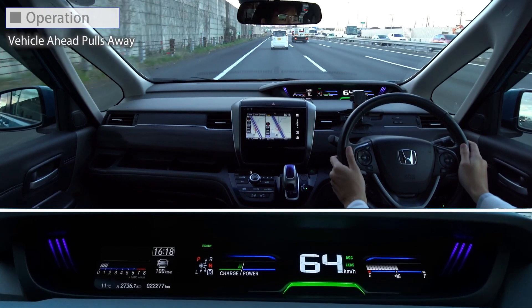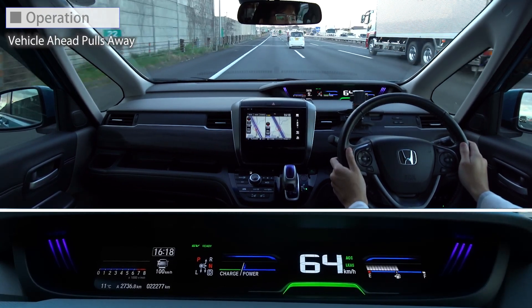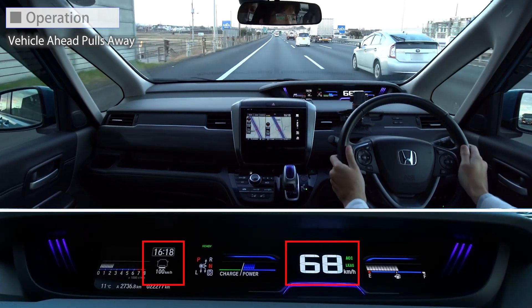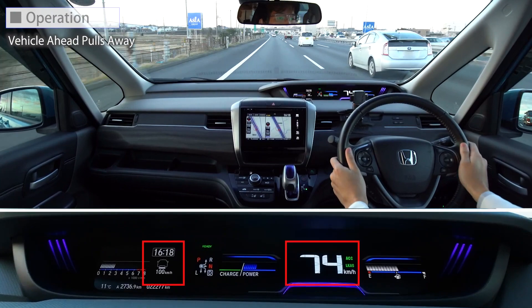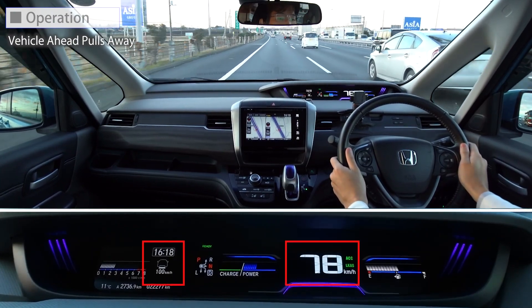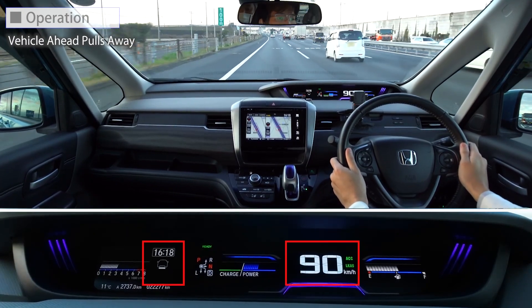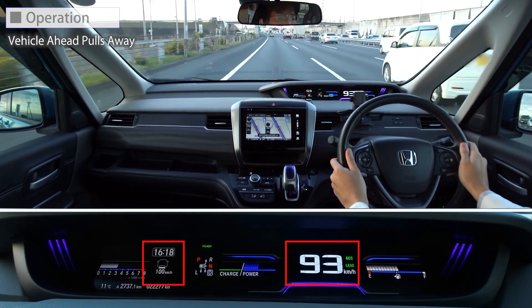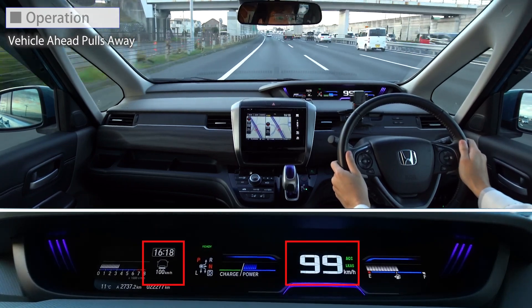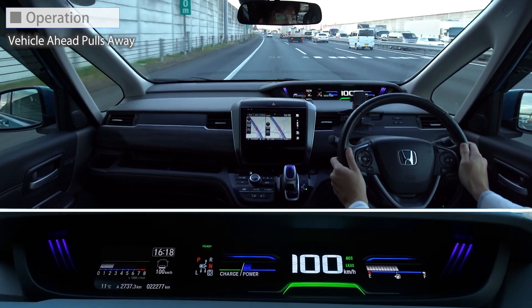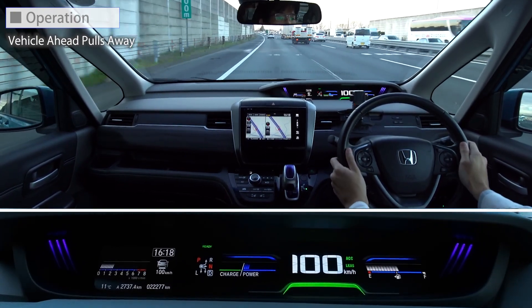Next, we will look at what happens when the vehicle in front moves out of its lane. When a vehicle in front pulls out of your lane while using ACC, the system automatically accelerates to the set speed. The vehicle accelerates towards 100 km per hour and is now cruising at the set speed of 100 km per hour.